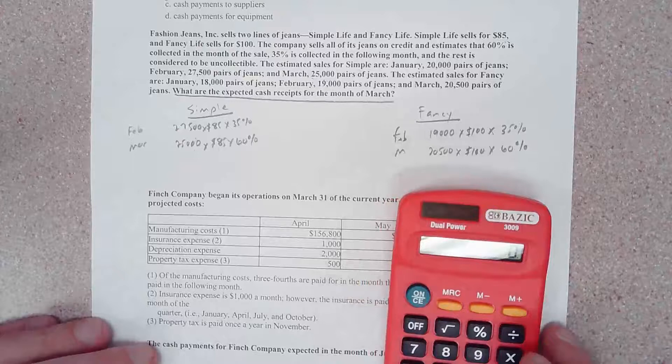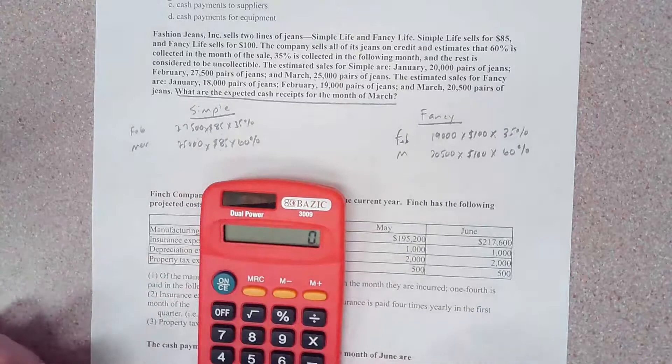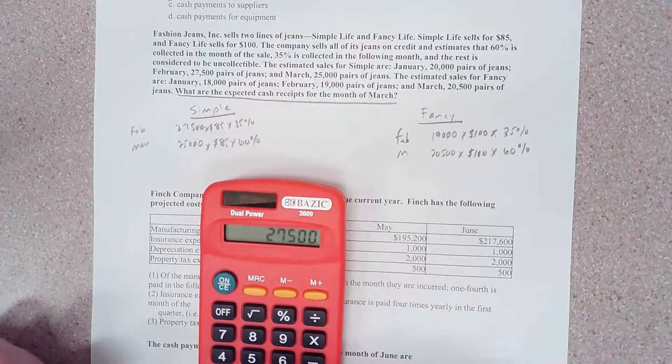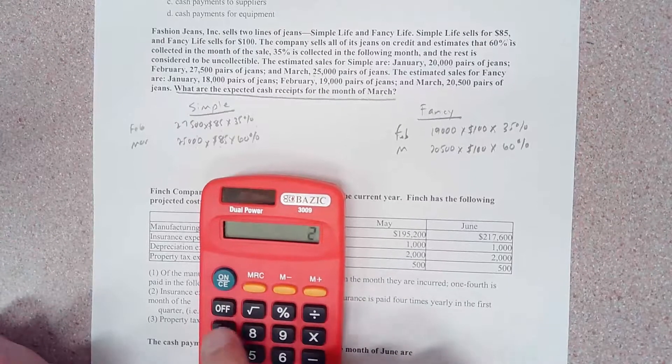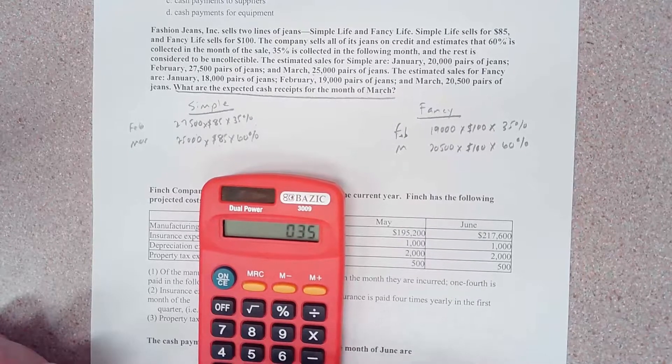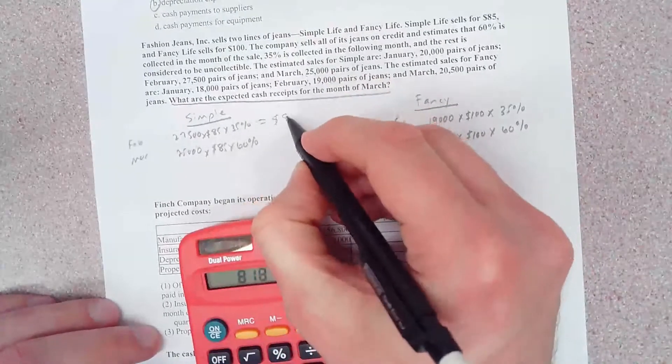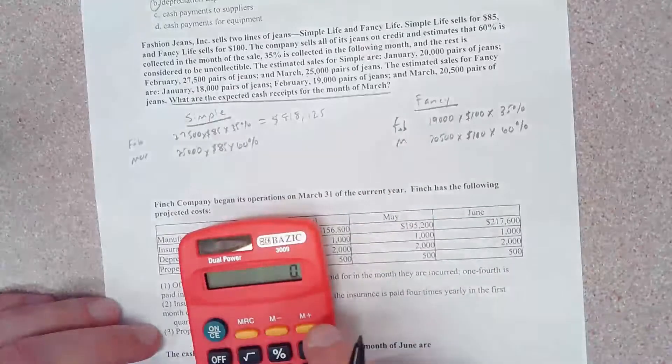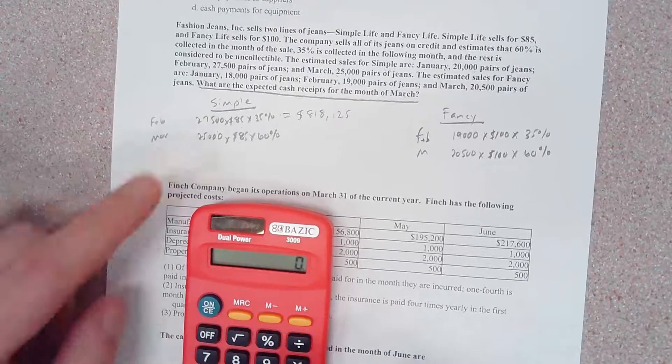Let's get our calculator out here and do some basic equations. We're going to start right over here: 27,500 times 85 times 0.35 equals 818,125.